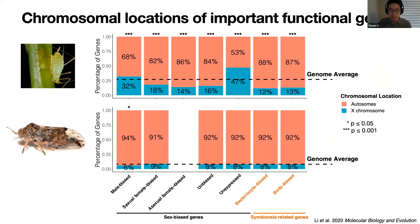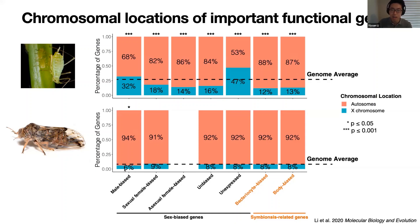We mapped important functional genes based on RNA-seq data, identifying male-biased genes, sexual-female-biased genes, asexual-female-biased genes, and bacteria-related genes. In aphids, male-biased genes and unexpressed genes are enriched on the X chromosome, but all other categories are enriched on the autosomes. In psyllids, we didn't see that pattern — all different gene categories are pretty consistent with the genome average, except the male-biased genes are slightly biased towards the autosomes. So these two species show the opposite pattern.